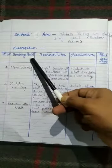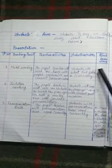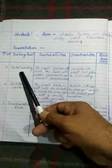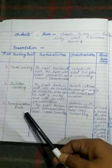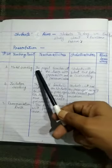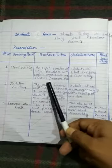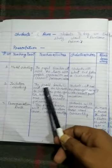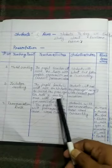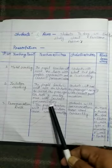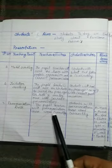Lesson number, teaching point, teacher activities, student activities, blackboard work. Here we write model reading, imitation reading, and third pronunciation drill. Here we write, the pupil teacher will read the lesson with proper expression and correct pronunciation. Next, the pupil teacher will ask the students to read the passage carefully one by one with correct pronunciation. And last, the pupil teacher will pronounce these words correctly.